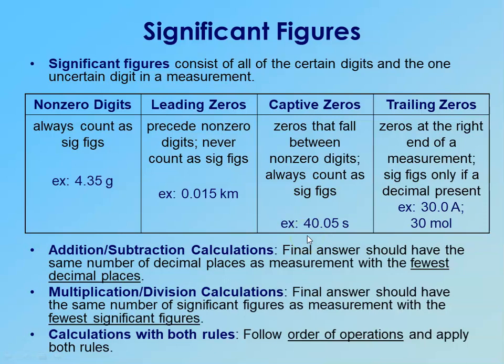Sig figs, just as a reminder, are all the digits that can be determined from a measuring device along with an uncertain, estimated digit. All of your non-zero digits will always count as significant figures — if you write down a number from one through nine, you wrote it down because it was part of your measurement. Sometimes you will have very small measurements with leading zeros — zeros that come before your first non-zero digit — and they would not count as significant figures.